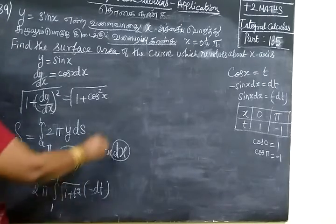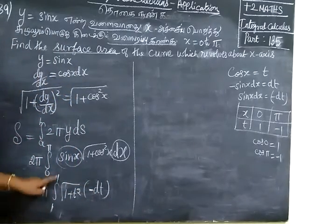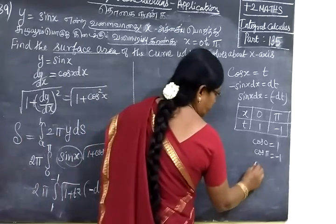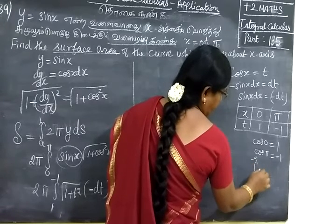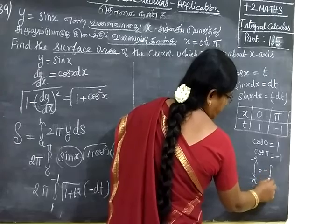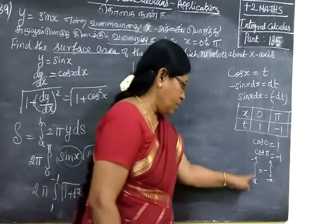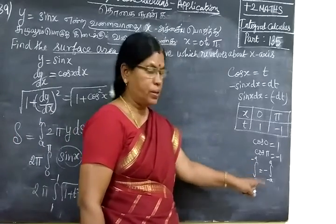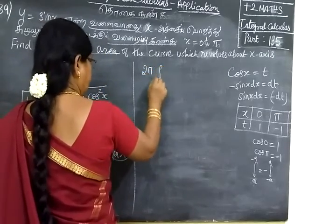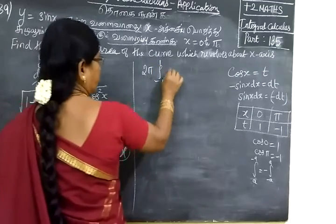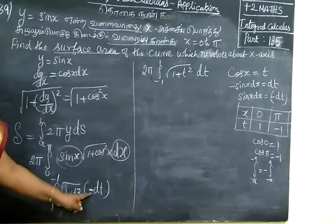The cos becomes t. Now the minus sign is removed by swapping the limits. The integral becomes 2π with limit minus 1 to 1 of root of 1 plus t² dt, with the minus removed.